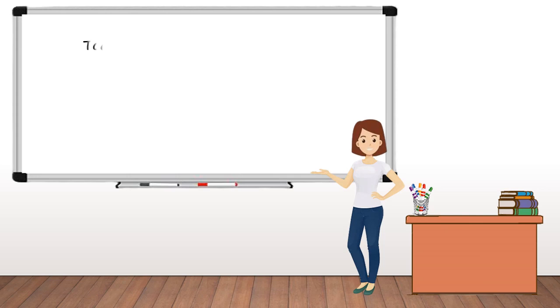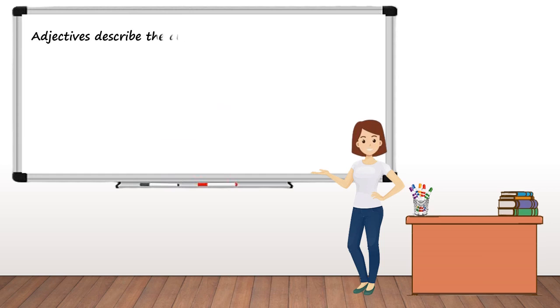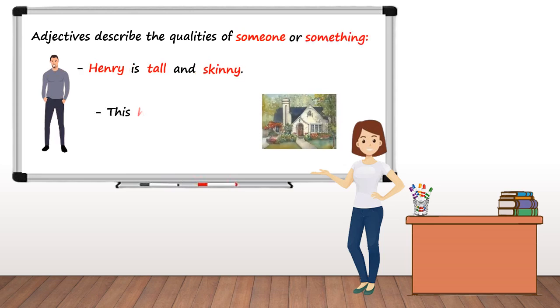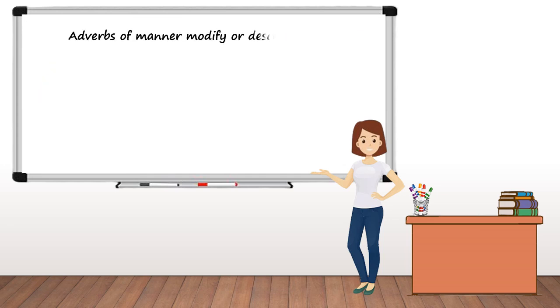Hello class, today we are going to learn the difference between adjectives and adverbs of manner. Let's get started. Adjectives describe the qualities of someone, as in Henry is tall and skinny, or something, as in this house is very old. Adverbs of manner modify or describe verbs, that is how we do something, as in my sister can run